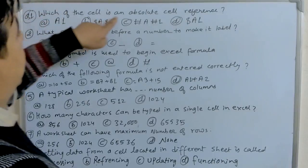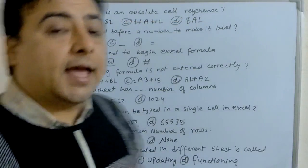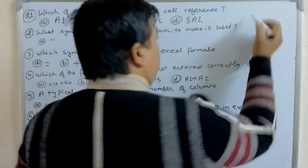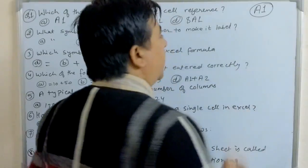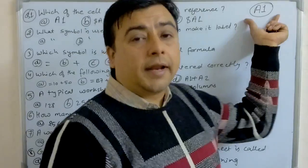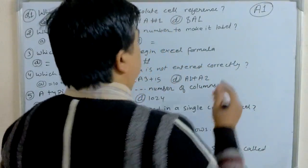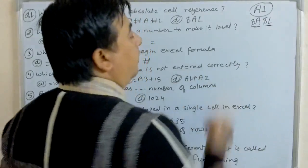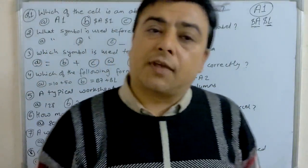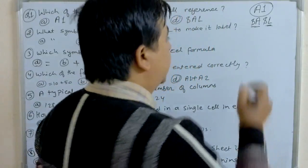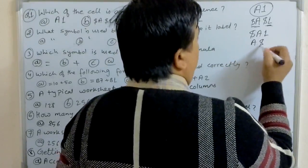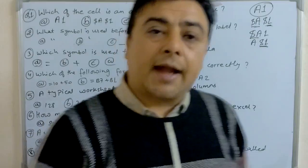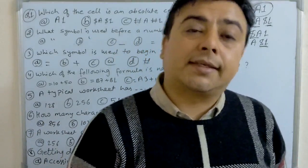The first question is: which of the following is an absolute cell reference? There are three types of cell reference. One is relative cell, where the dollar sign is not used — for example, A1. Absolute cell uses a dollar sign in both column and row, like $A$1. And mixed cell uses the dollar sign in either the column or the row, like $A1 or A$1.